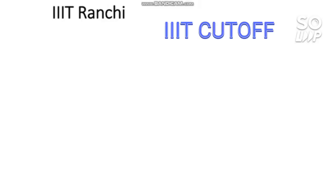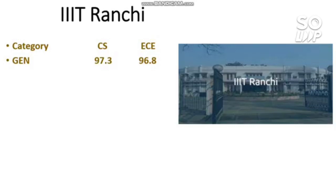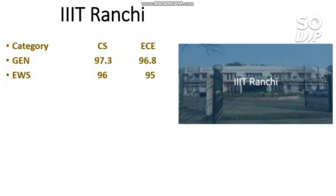Now moving to the IIIT cutoffs. For IIIT Ranchi, the cutoff for CS and EC branches: General requires 97.3 percentile for CS and 96.8 for EC. EWS requires 96 for CS and 95 for EC. OBC requires a similar percentile to EWS. SC requires 77 and 74 percentile. ST requires 76 and 73 percentile.